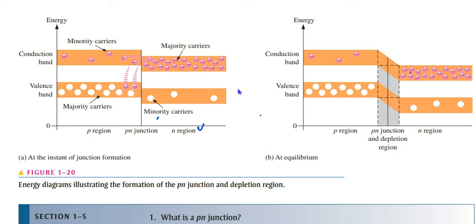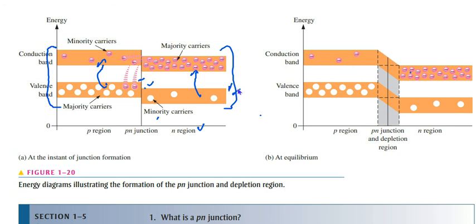When we apply a small amount of energy to the N-region, electrons jump from the valence band to the conduction band. This region has a lower energy state. In the P-region, a higher amount of energy is needed for electrons to jump from the valence band to the conduction band, so it has an upper state compared to the N-region.